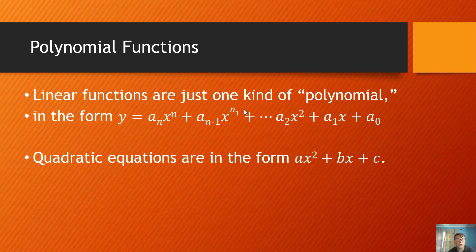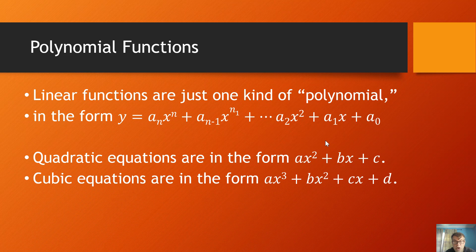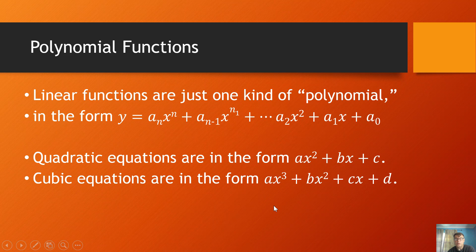Two special kinds of polynomial functions are the quadratic equations, which are to the second power. So they can be expressed in this form. There are other forms. A lot of times they're parabolas, for example. And then cubic equations are third power, third degree polynomial equations. Again, if b is 0, then this term drops out. If d is 0, then this term drops out, and so forth. Polynomial functions.